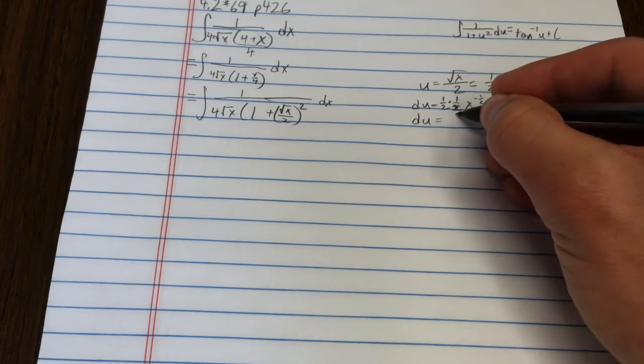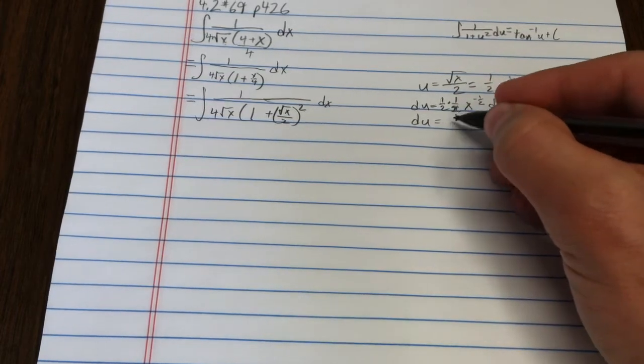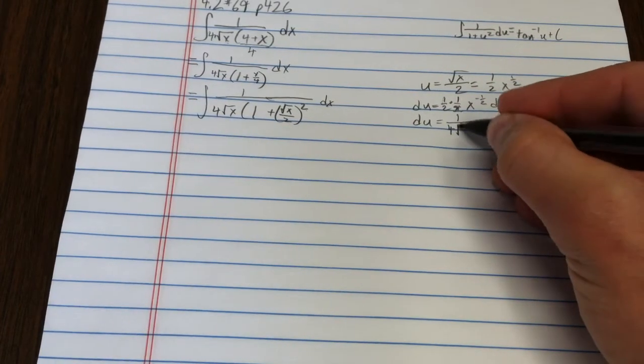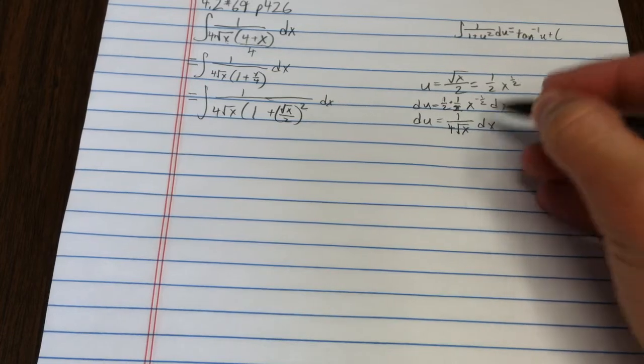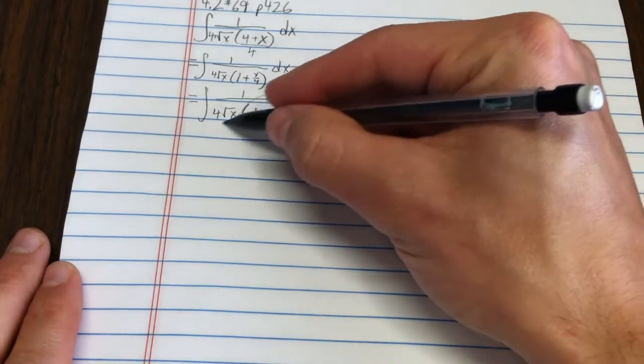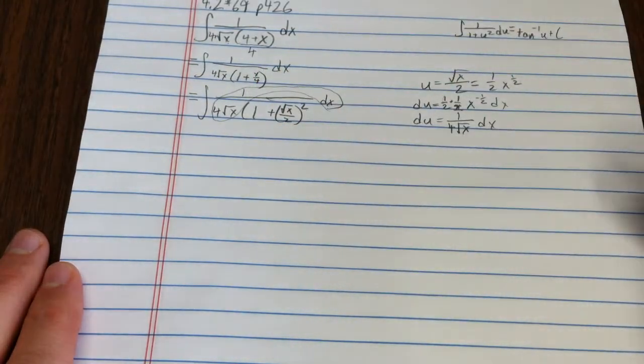Well that means du is 1 over 4 square root x dx. Man, I'm not even going to have to add in any fancy stuff. That works well, that's my du.